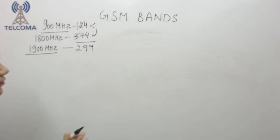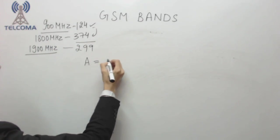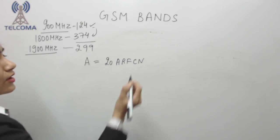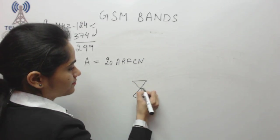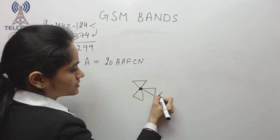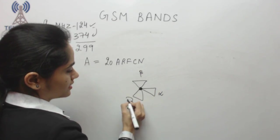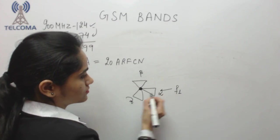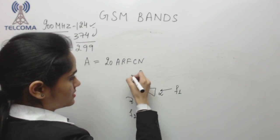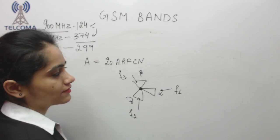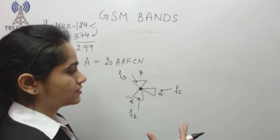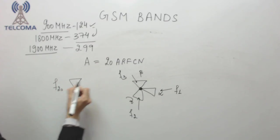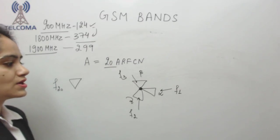For example, a company has purchased 20 ARFCN. If we have a cell divided into three sectors - alpha, beta, and gamma - frequency is required by each sector. If I have ARFCN from F1 to F20, I have only 20 ARFCN total.